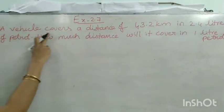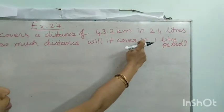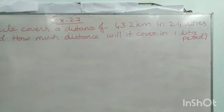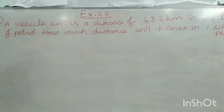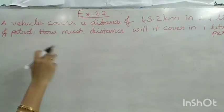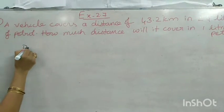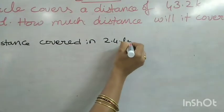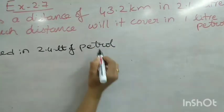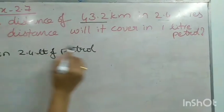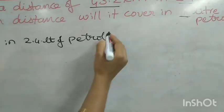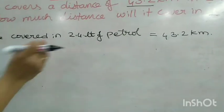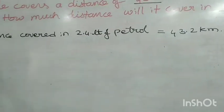Question 6: A vehicle covers a distance of 43.2 kilometres in 2.4 litres of petrol. How much distance will it cover in 1 litre of petrol? When finding the value for 1 unit, you divide. Distance covered in 2.4 litres = 43.2 kilometres.